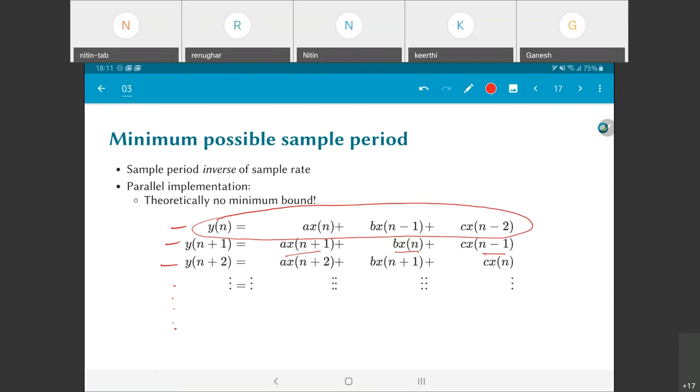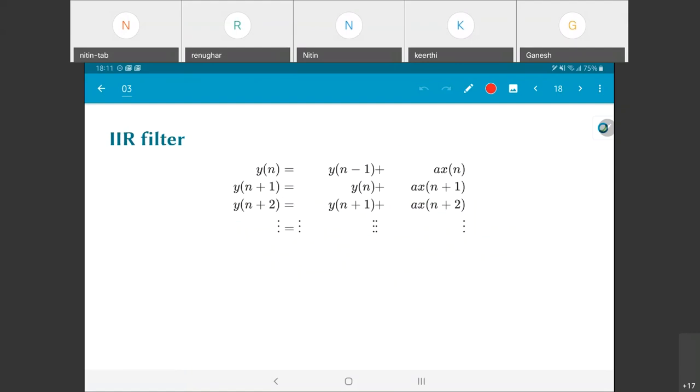However, if I am trying to implement a different kind of filter, in particular an infinite impulse response filter, the situation is slightly different. Why is that? Let's say that I have a very simple infinite impulse response filter defined by this equation: y(n) = y(n-1) + a·x(n). What will y(n+1) be? It will be determined by y(n) + a·x(n+1).